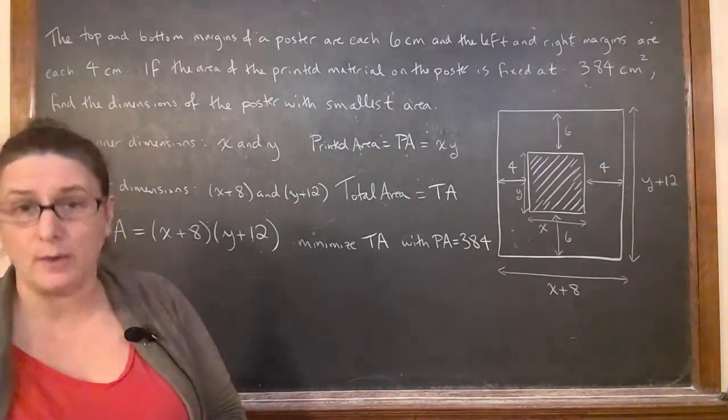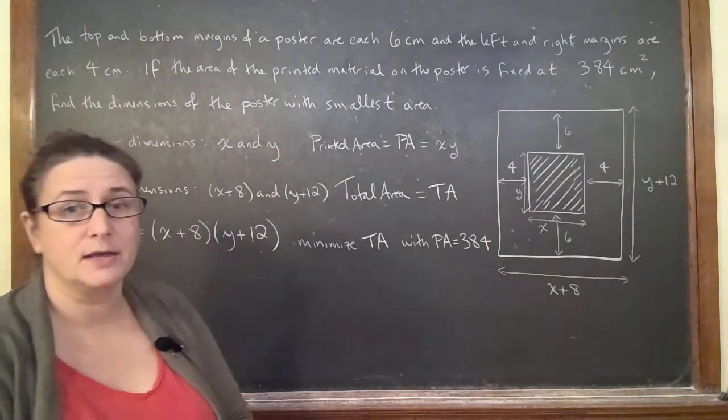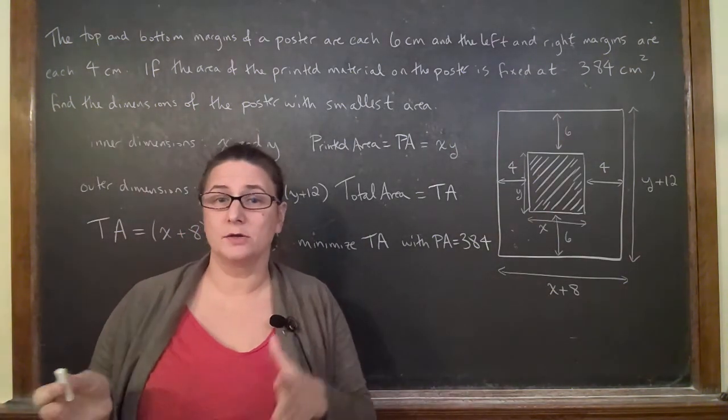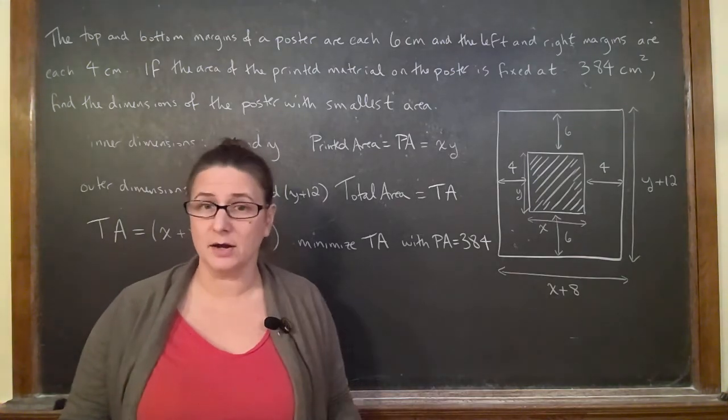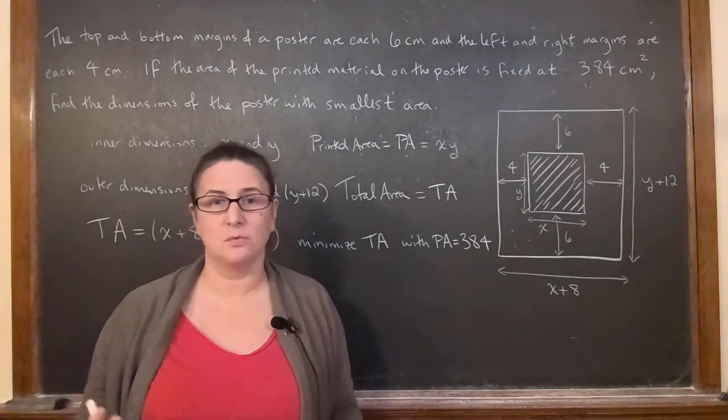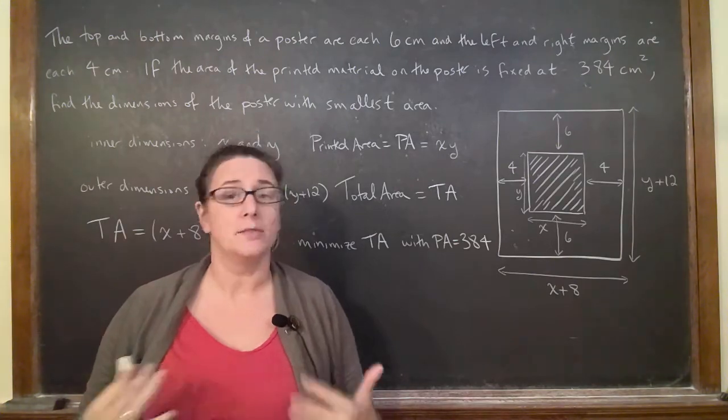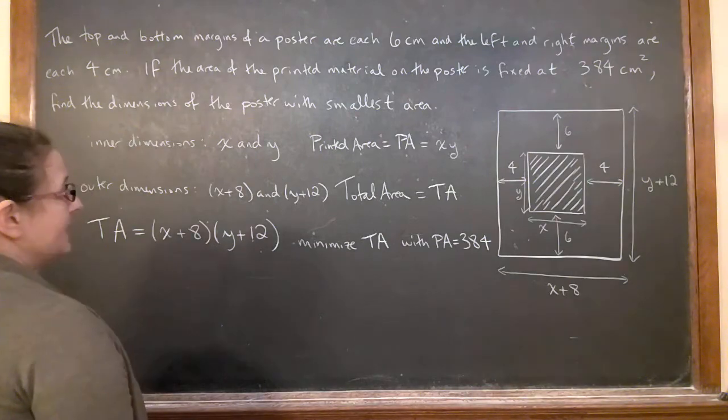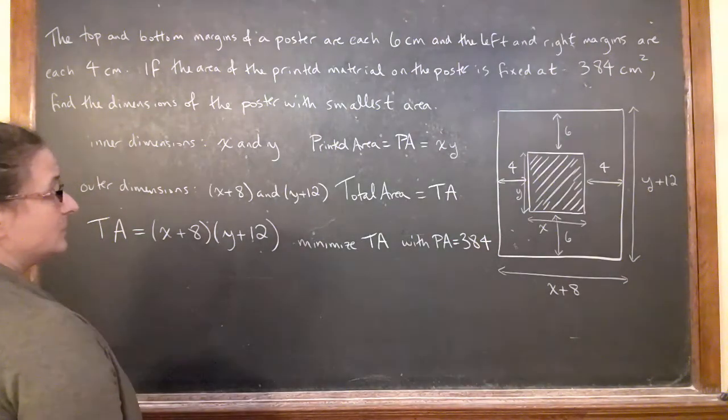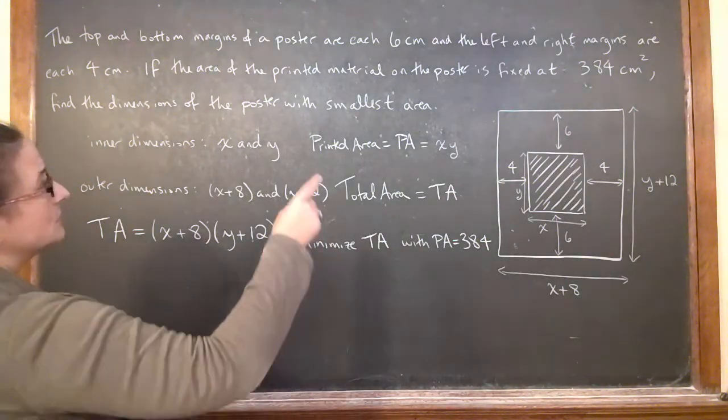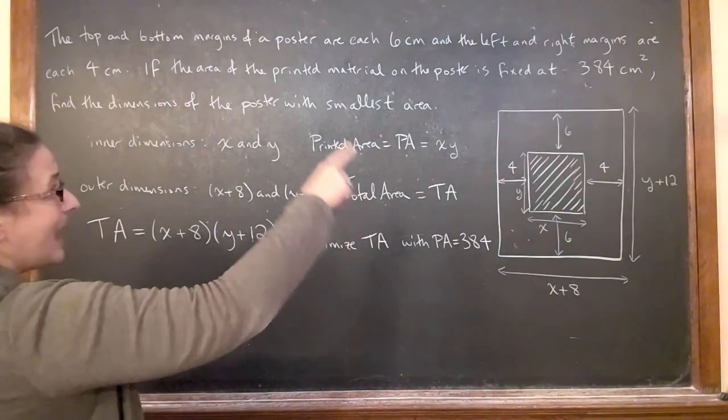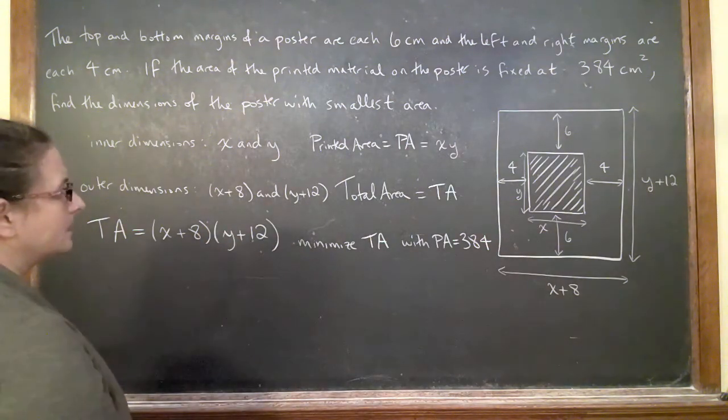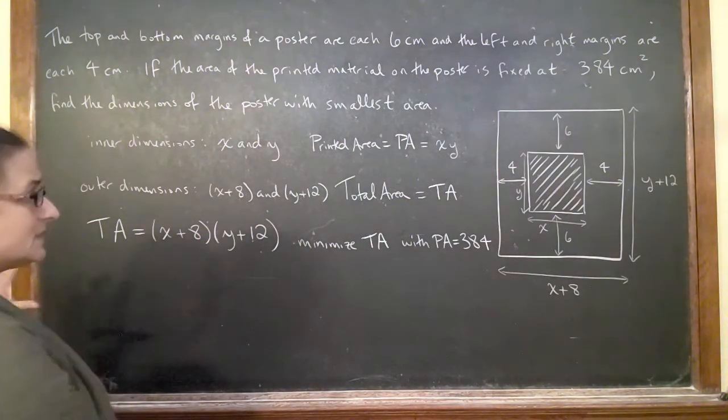They could have asked this the other way. They could have given you a fixed total area and they want you to maximize or minimize the printed area, depending on how they're setting up the problem. So there's various iterations of this. But in our case, we've set the printed area at a specific number and we're going to minimize the total area.